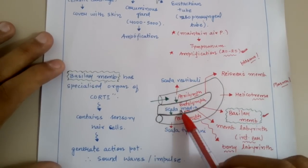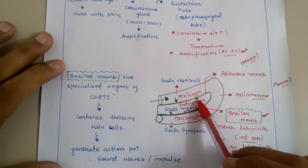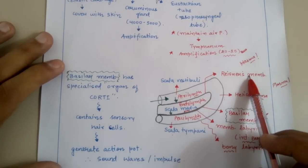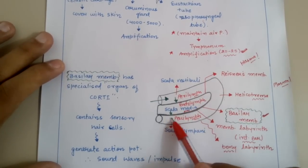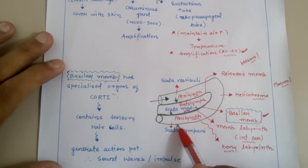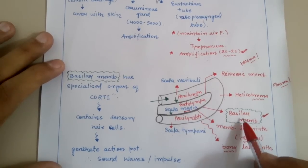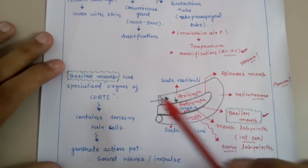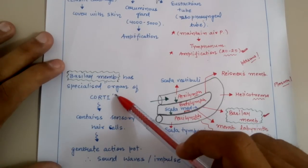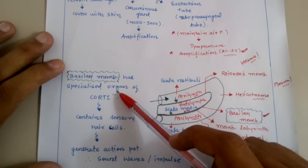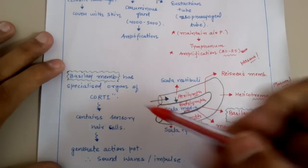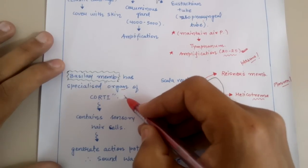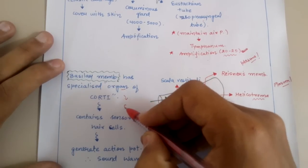The membrane present between the scala vestibule and the scala media is known as Reissner's membrane, and the membrane present between the scala media and scala tympani is the basilar membrane. A very important point about the basilar membrane is that it has specialized cells known as the organ of Corti.